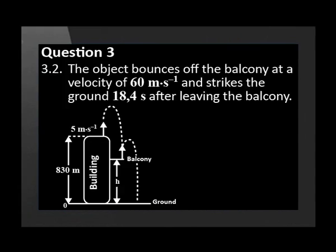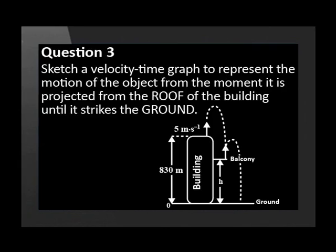The object bounces off the balcony at the velocity of 60 meters per second and strikes the ground 18.4 seconds after leaving the balcony. Sketch a velocity time graph to represent the motion of the object from the moment it is projected from the roof of the building until it strikes the ground.